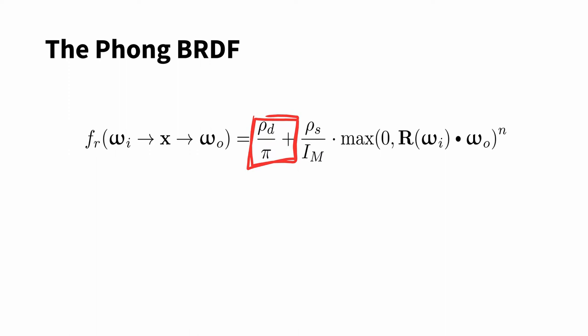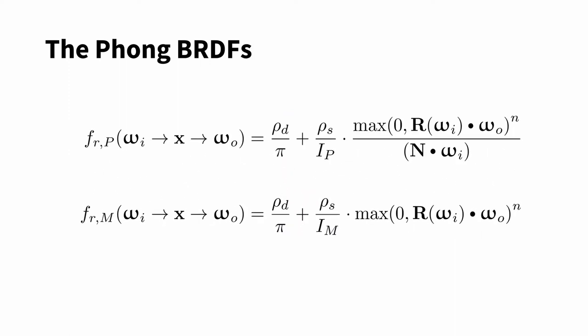Oh, and the original Phong BRDF included a Lambertian BRDF too. And I guess the last detail is that Phong's work predated Kejia's work on the rendering equation, so you have to divide out the geometric term. So really, there's two variants: Phong's original version and some modified Phong version.